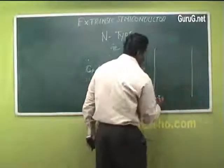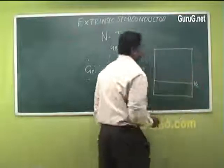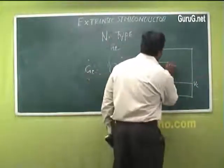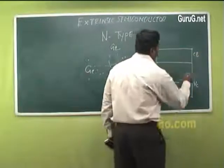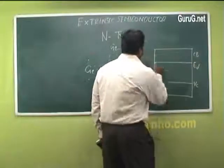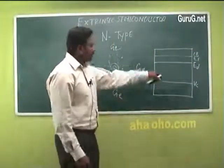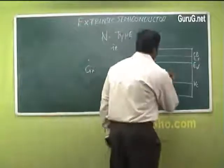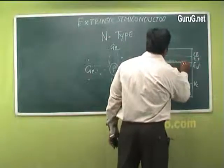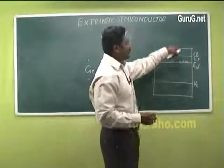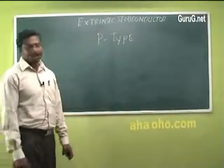In the energy level diagram for n-type semiconductors, there is a valence band, a conduction band, a donor energy level ED, and a Fermi energy level EF. The donor energy level donates electrons to the conduction band.